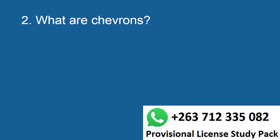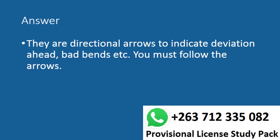Question 2. What are chevrons? Answer. They are directional arrows to indicate deviation ahead, bad bends, etc. You must follow the arrows.